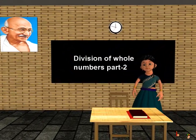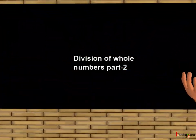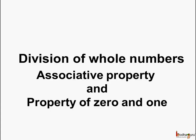Good morning children. Now we know two properties related to division of whole numbers, which are commutative property and closure property. Let us see the other properties related to division of whole numbers.